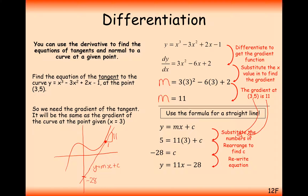It's always the same process for finding a tangent of a graph: differentiate the function first, then work out the gradient for a certain point of x, then plug the gradient and the coordinate back into the equation of a straight line to get c, and then rewrite out your final answer.